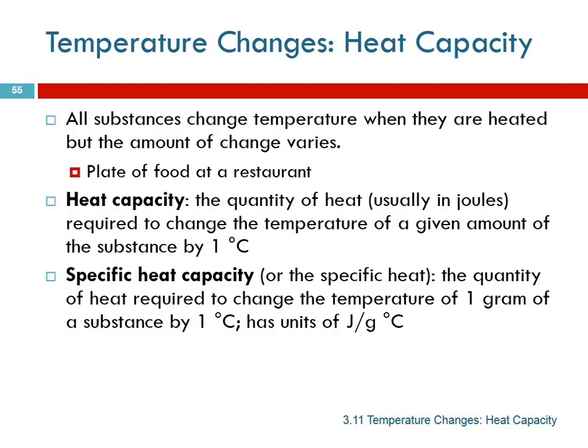The potato. Potatoes stay hot forever — they take forever to cool down. That toast is going to be cold in no time. Why does that happen? Because different substances change temperature a different amount when exposed to heat or cold. That has to do with something called the heat capacity of the substance, and it's different from one substance to another.